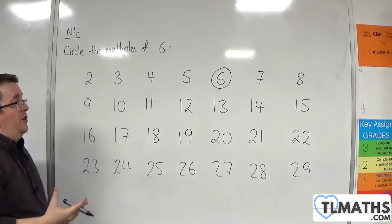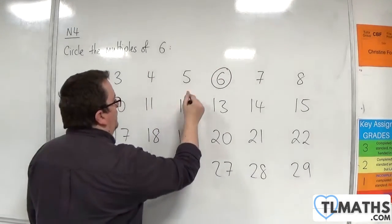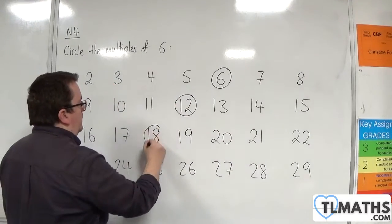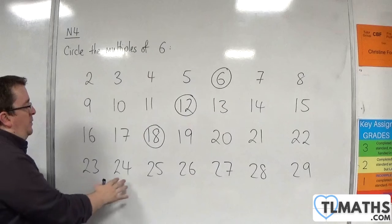Then we would have 2 times 6, which is 12. Then 3 times 6, which is 18. Then 4 times 6, which is 24.